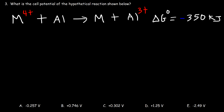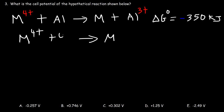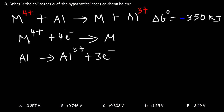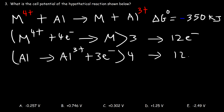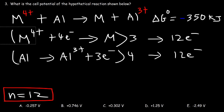Number 3: what is the cell potential of the hypothetical reaction shown below? We already have delta G, so once we find n we can calculate the cell potential. For the first half reaction, M4+ turns into M, so we need 4 electrons to balance it. For the second half reaction, we need 3 electrons. To make the electrons equal, 4 times 3 is 12, so we multiply the first by 3 and the second by 4, giving 12 electrons in both cases. So n equals 12 for this example.